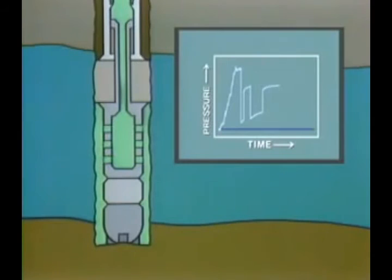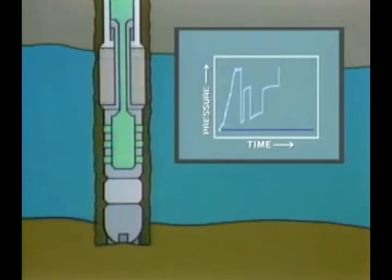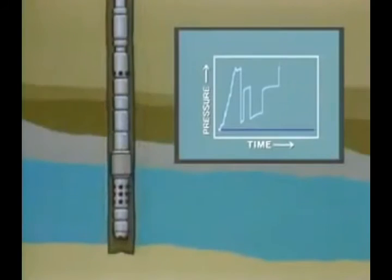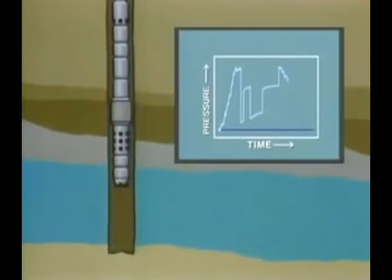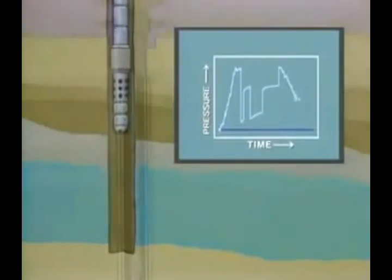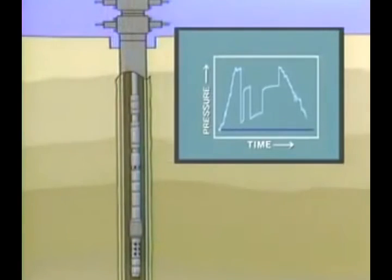Any produced hydrocarbons are then reverse circulated out of the test string. The packer is carefully released, and the tool pulled to the surface. Note that the hydrostatic pressure imposed by the mud column at the bottom of the drill stem as soon as the packer is released is reduced as the tool string is pulled out of the hole.